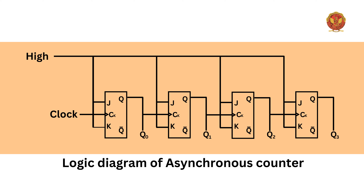Look at this diagram. Asynchronous counters mainly use the toggle state. As you can see, we have a 4-bit counter with 4 JK flip-flops. The first flip-flop is Q0, the least significant bit. Q1 is the next bit, Q2 the further next bit, and Q3 is the most significant bit. You can see that J and K are continuously high — the 1-1 combination — which means toggling.